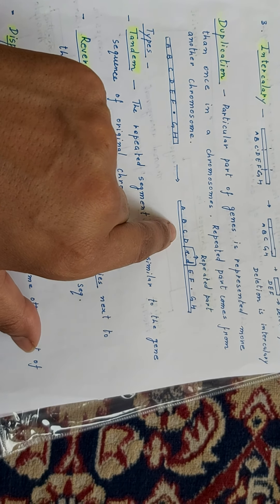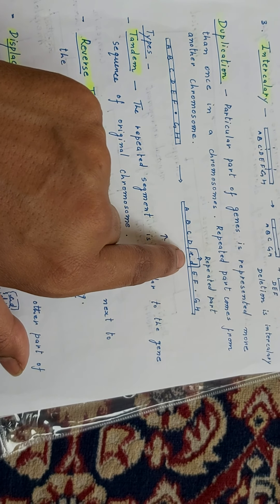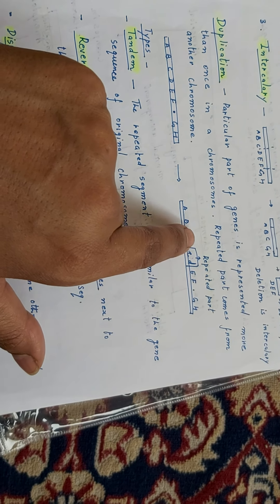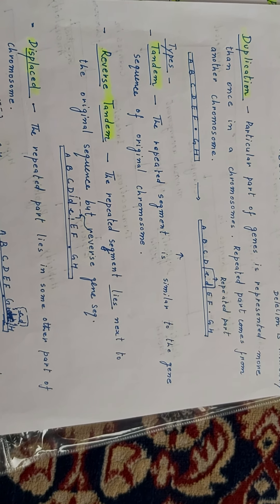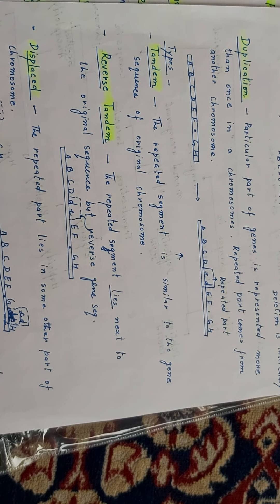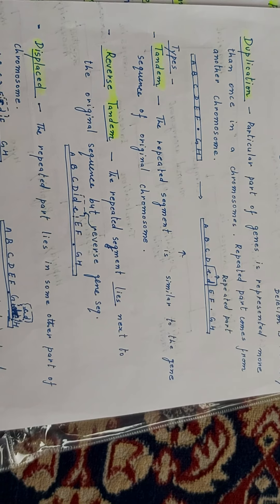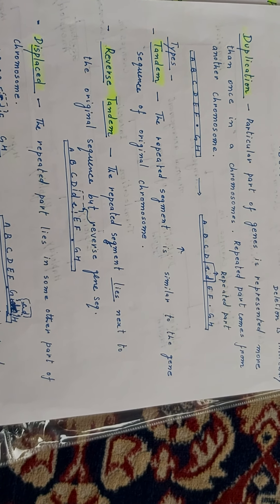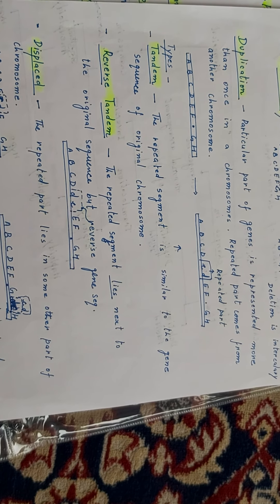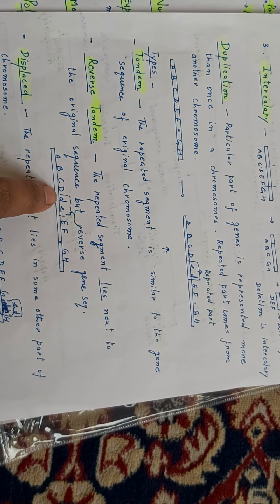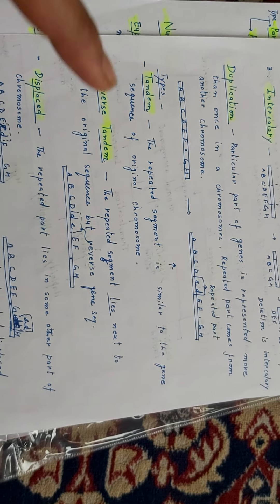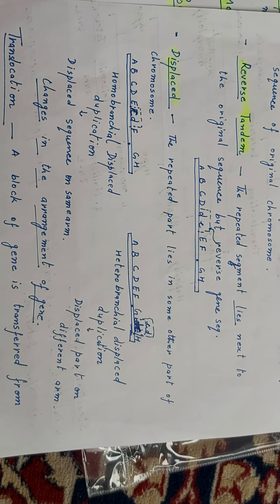Tandem duplication: the repeated segment is similar to the gene sequence of the original chromosome — the sequence on the original chromosome and the repeated part both have the same sequence. Capital C and capital D are original genes, while small c and small d are the repeated genes, but their sequence is the same as the original chromosome. This is tandem duplication — dvigunan — doubling of genes in the chromosome. Next is reverse tandem: the repeated segment lies next to the original sequence but in reverse gene sequence. Here C, D becomes D, C — this is reverse tandem.